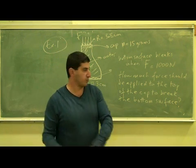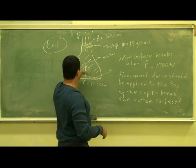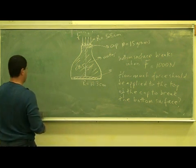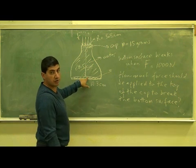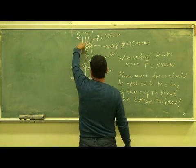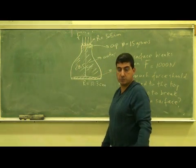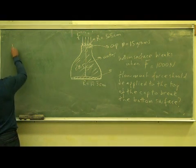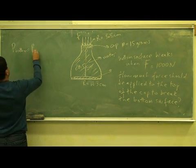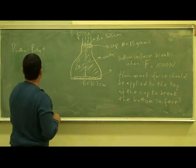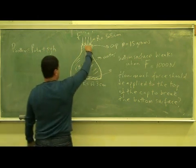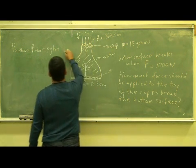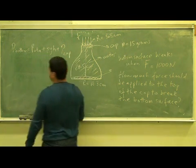We're going to use Pascal's principle — any added pressure that I apply at the top is going to be realized down at the bottom. So what is the pressure at the bottom to begin with? We have atmospheric pressure on top, plus the pressure due to the weight of the cap — which could be a cap, a piston, or anything. So pressure at the bottom equals atmospheric pressure plus ρgh plus the pressure due to the cap.